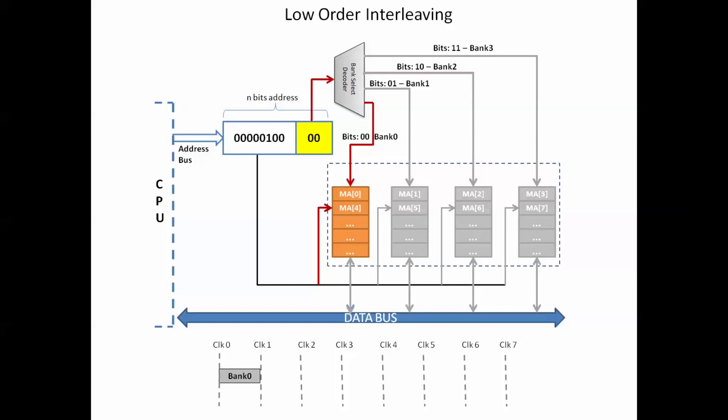So after the first cycle, the state of the system will look like this. And in subsequent cycles, the fetching of data and the selection of bank and word will overlap.